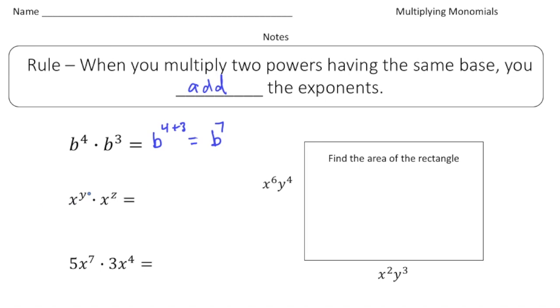So here we have x to the y power times x to the z power. Again, the bases are the same, they're x's, so it's just going to be x to the y plus z power.